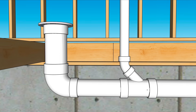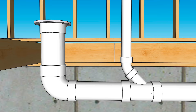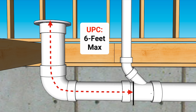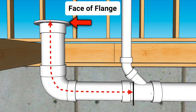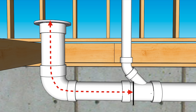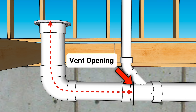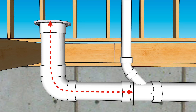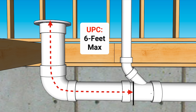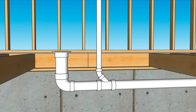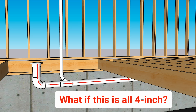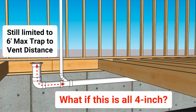If your plumbing code is the UPC, they're not as generous. In the UPC, the toilet's trap-to-vent distance is limited to six feet. Here's how the UPC wants this measurement taken: you'll measure from the face of the closet flange along the centerline of the pipe to the inner edge of the vent opening. So those in UPC jurisdictions make sure this distance is six feet or less. Additionally, if you plumb your toilet with a four inch toilet drain, the UPC still limits your trap-to-vent distance to six feet.